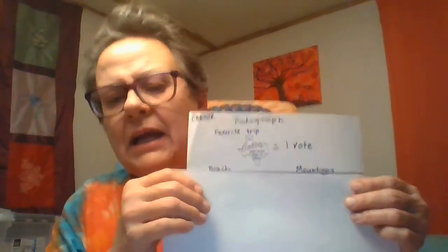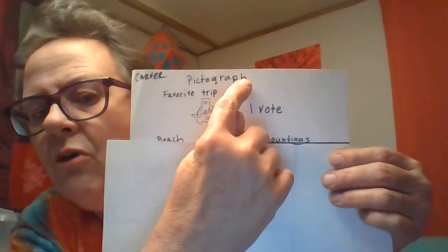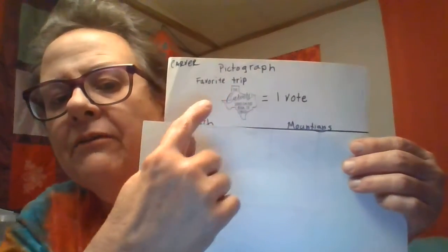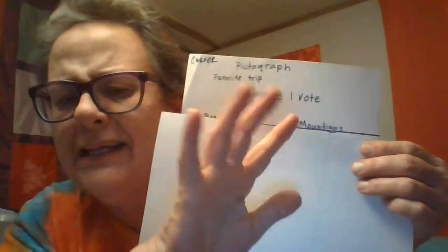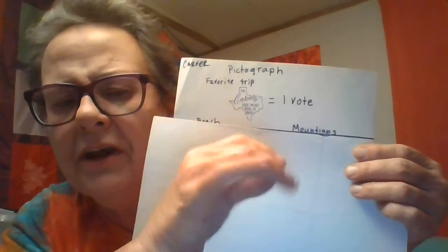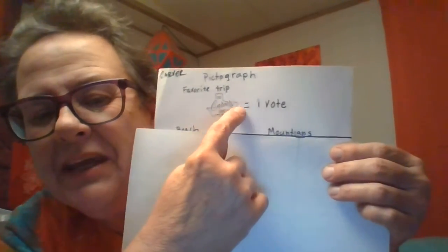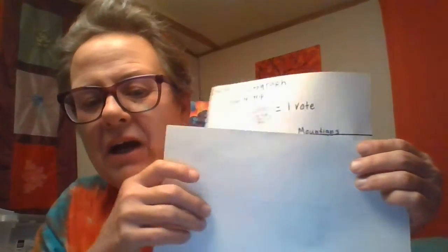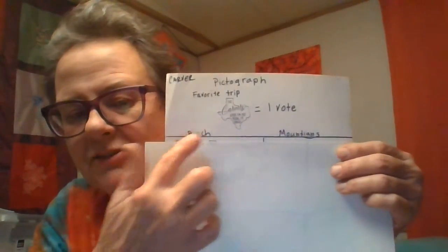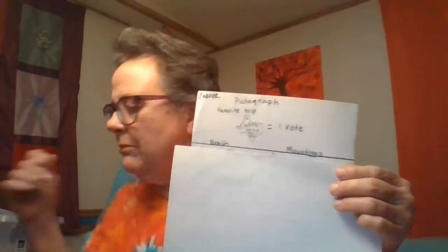I took the information from a favorite trip question: did you want to go to the beach or to the mountains? So I put up here 'Pictograph' and the title 'Favorite Trip,' and here's my key. My hand's been bothering me so I didn't want to do a lot of drawing — I used my address stamp. One address stamp equals one vote. The choices are beach and mountains.